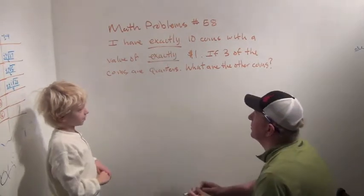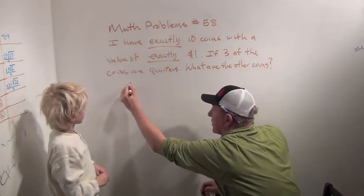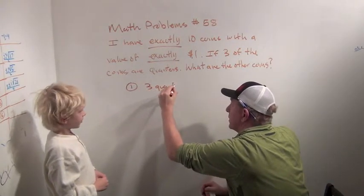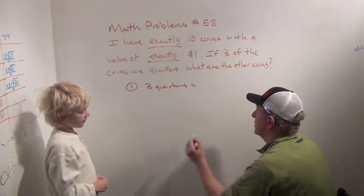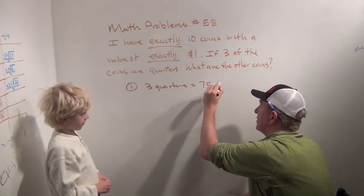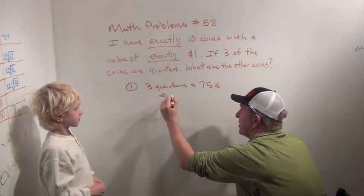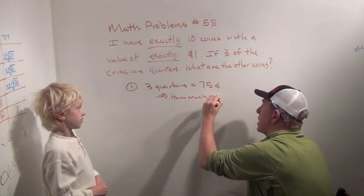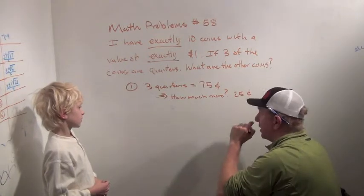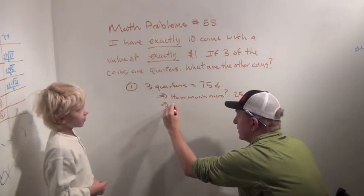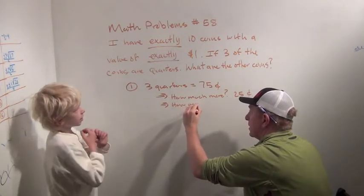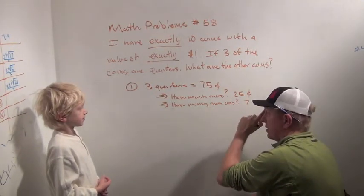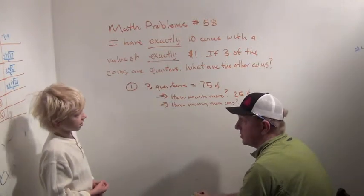So first, step one was three quarters. Three quarters equaled what? Equaled 75 cents. So that meant we had how much more to go? 25 cents. So that's what you thought about. And then how many more coins? Well, there's seven coins left. So that's how you got your 25 cents with seven coins, right?